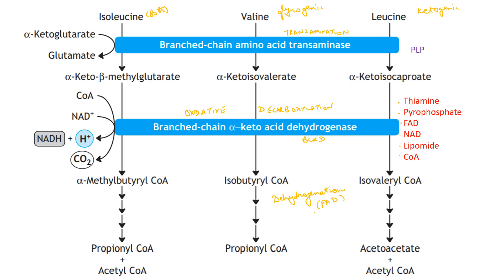Then the metabolism of branched-chain amino acids diverges and takes independent routes. In a series of reactions, isoleucine forms propionyl-CoA and acetyl-CoA, valine forms propionyl-CoA, and leucine ultimately forms acetoacetate and acetyl-CoA, which can take part in fat synthesis.